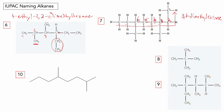Number eight: the chain — meth, eth, prop — is propane, and it doesn't matter which direction you number it. We have two methyl groups — CH3 and CH3 — attached to the second carbon. Even though we've got two methyls on the same carbon, we still have to number both of them. So the name is 2,2-dimethylpropane.